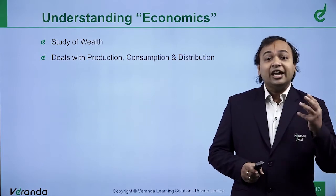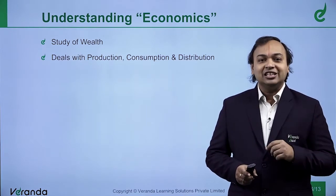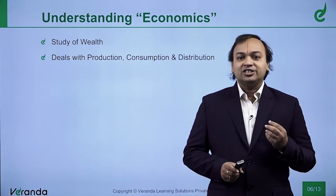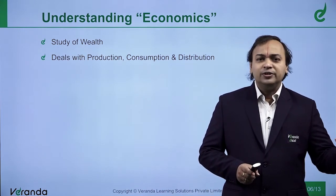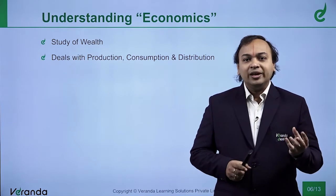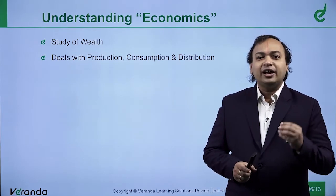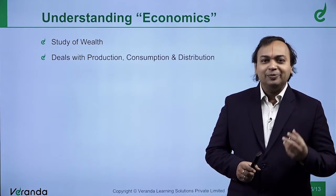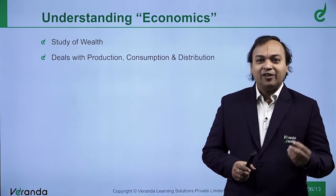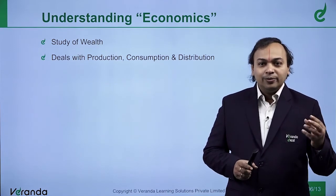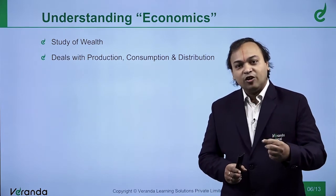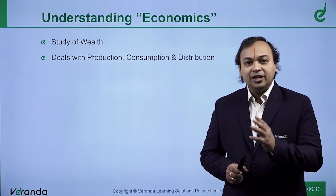Economics deals with three important things: production, consumption, and distribution. Why production? Because raw material may be converted into a finished product. Take the case of daily milk — raw milk comes delivered by your milk vendor. Can you directly consume it? Predominantly, people will boil the milk and then prepare tea, coffee, or other things they consume on a daily basis. The milk got converted into a different product, and that particular change is called production.